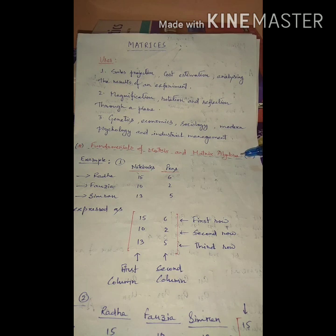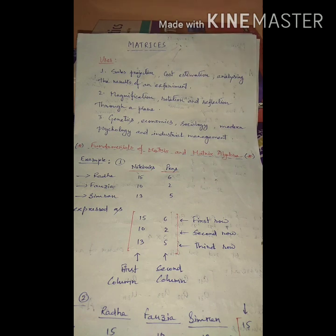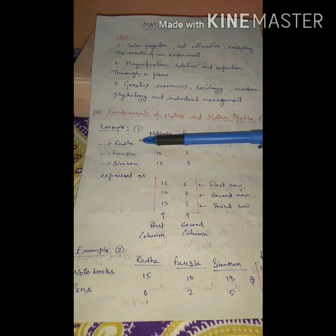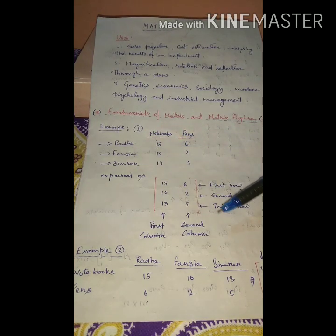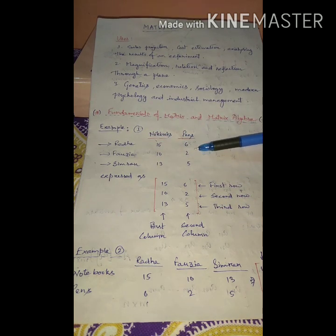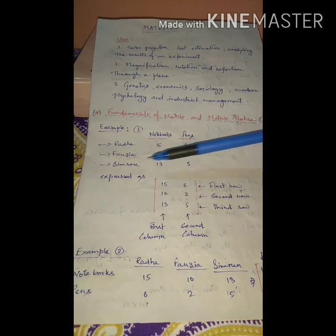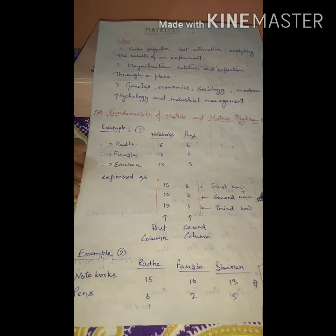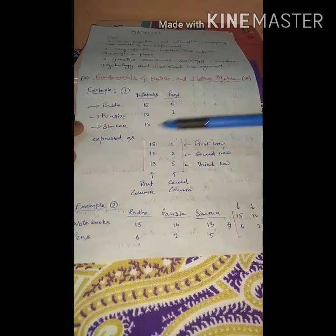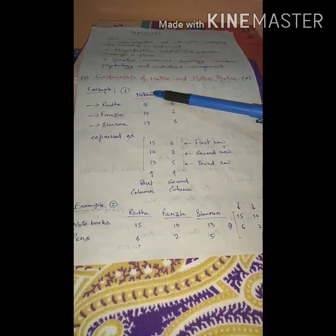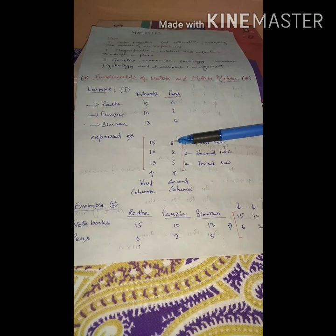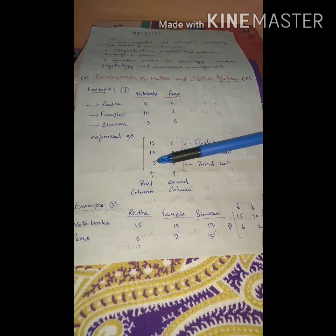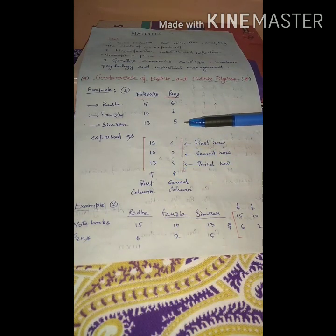Here we discuss the fundamentals of matrix and matrix algebra. 'Matrices' is the plural form of matrix. Let's take an example. Consider three people: Radha, Fosia, and Simran. Radha has 15 notebooks and 6 pens, Fosia has 10 notebooks and 2 pens, and Simran has 13 notebooks and 5 pens. We can express these results in big brackets as a matrix: first row 15 6, second row 10 2, third row 13 5.